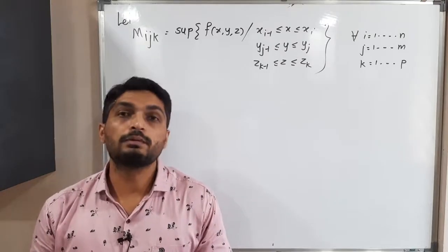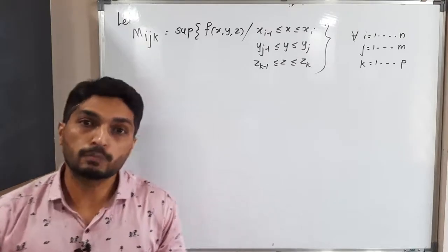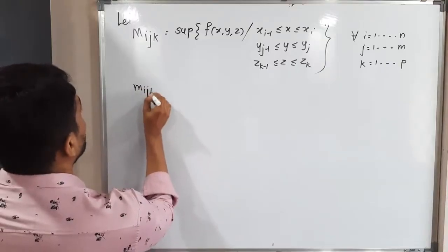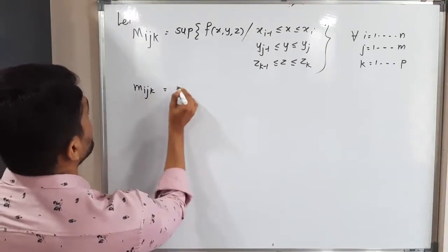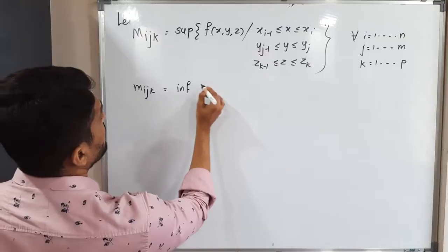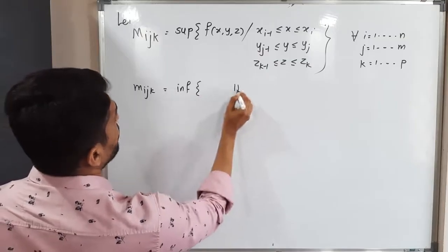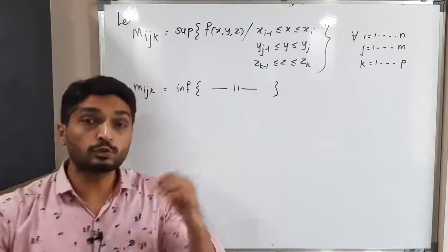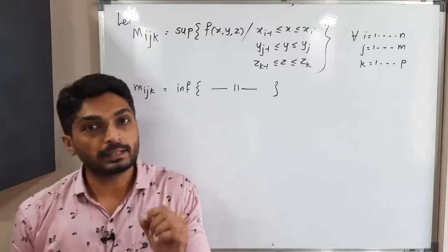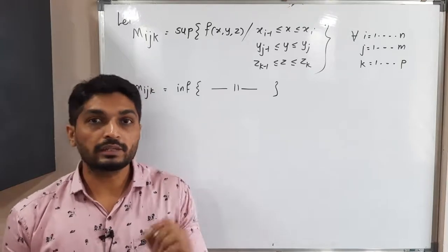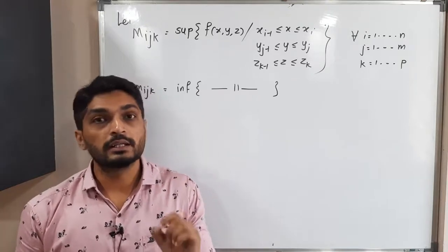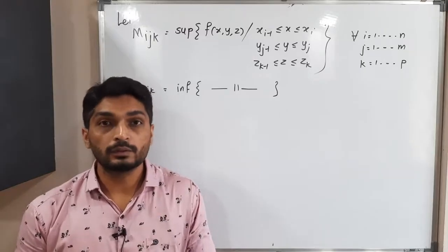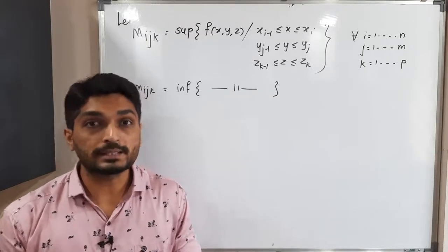Over each sub-cuboid the function also has a minimum value, called small m_ijk, which equals the infimum of f over the same sub-cuboid. When we take the supremum we get capital M_ijk, and when we take the infimum we get small m_ijk.